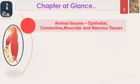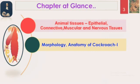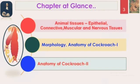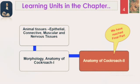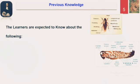As we know, the chapter has been divided into three learning units. We have completed the first and second unit, dealing with animal tissues — all the types — and morphology and anatomy of cockroach. We will continue with the anatomy of cockroach in this part. As far as the concept ladder is concerned, we have reached the final ladder: anatomy of cockroach.